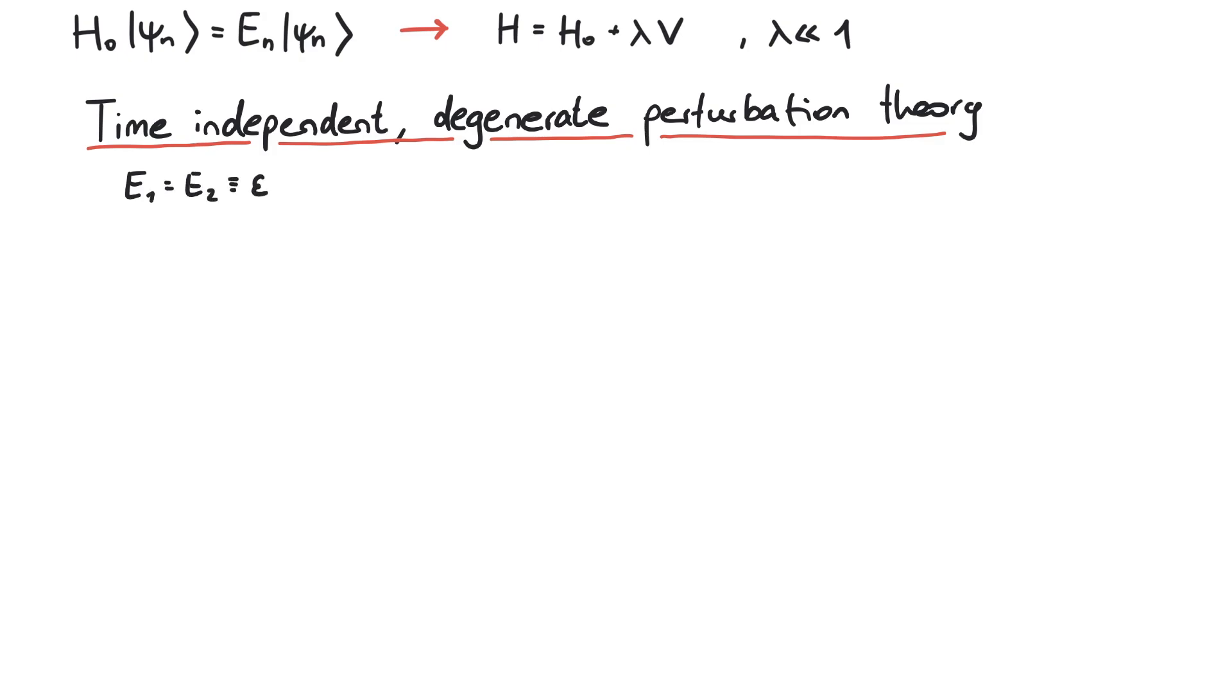But still, psi1 and psi2 are distinct eigenfunctions, which means they are orthogonal. What comes now should only be applied to psi1 and psi2, since all other eigenfunctions can be handled by Rayleigh-Schrodinger perturbation theory.